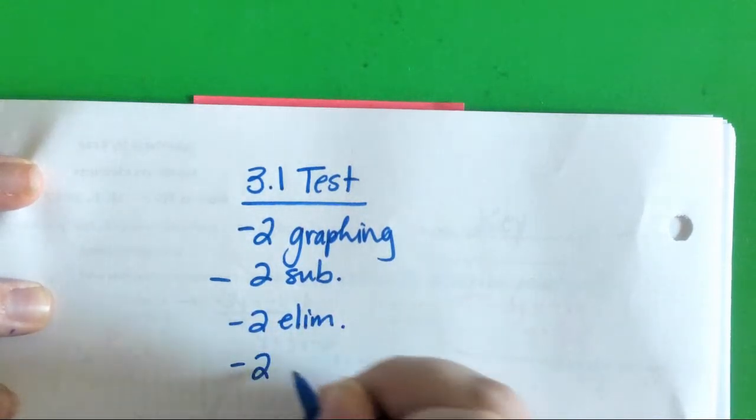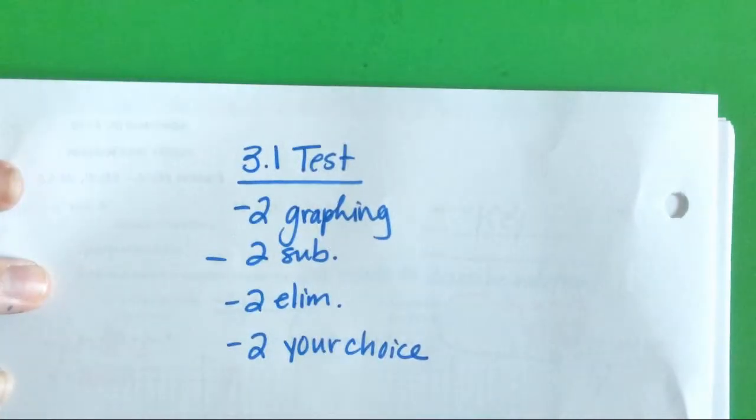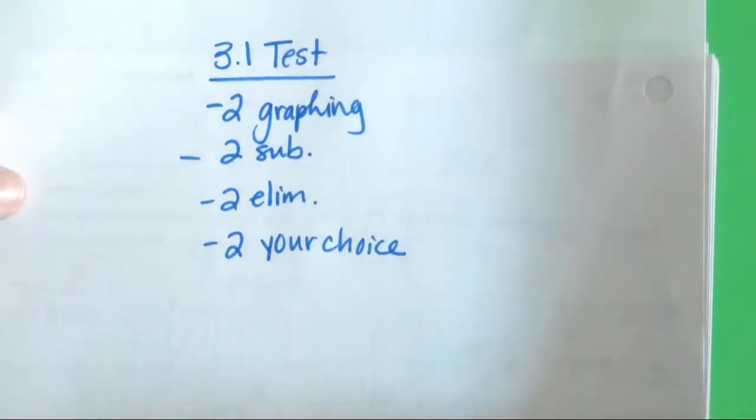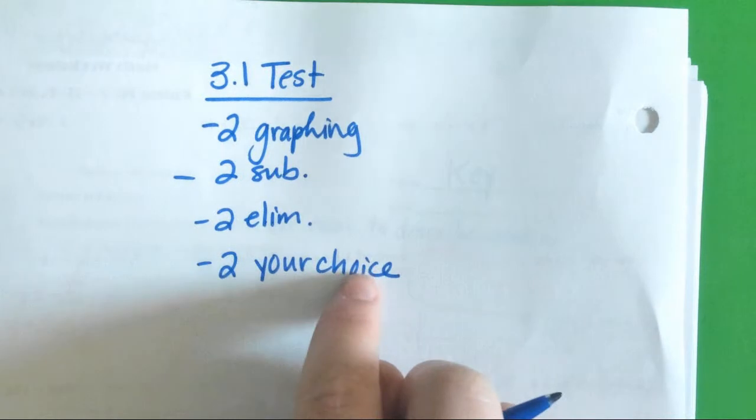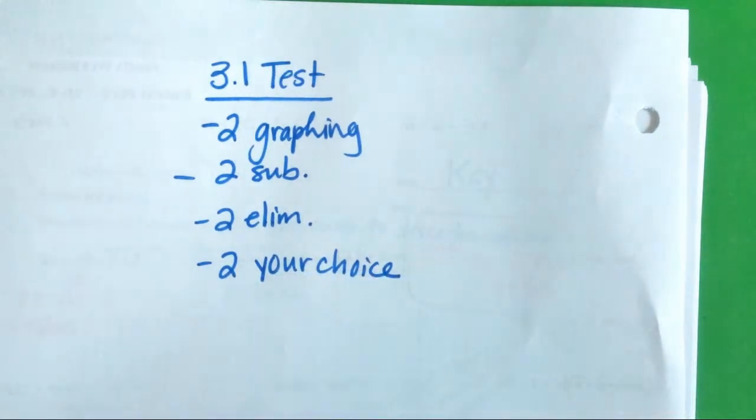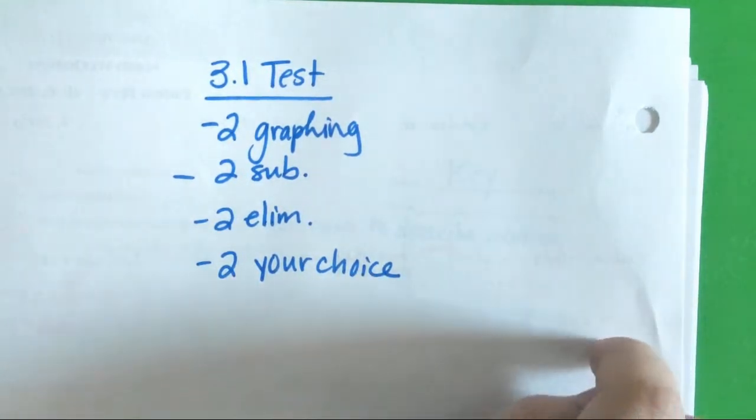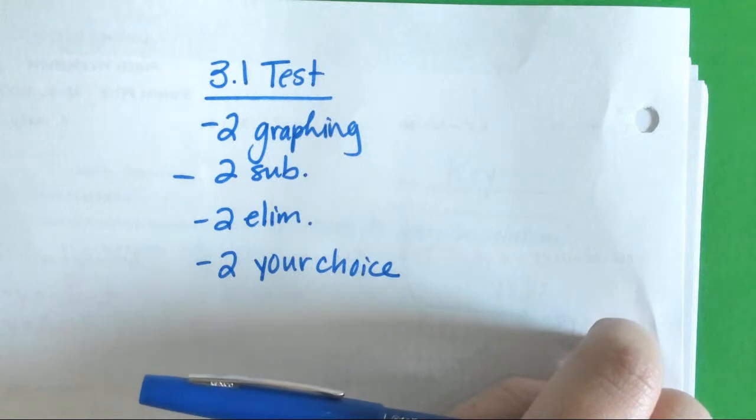And then two, I'm going to say, are your choice, which means it says in the directions, solve by either elimination or substitution. But if you wanted to solve by graphing, that's fine too. You get to choose how you want to solve things. You're like, Ms. Compton, you said that was 10. That only adds up to 8.